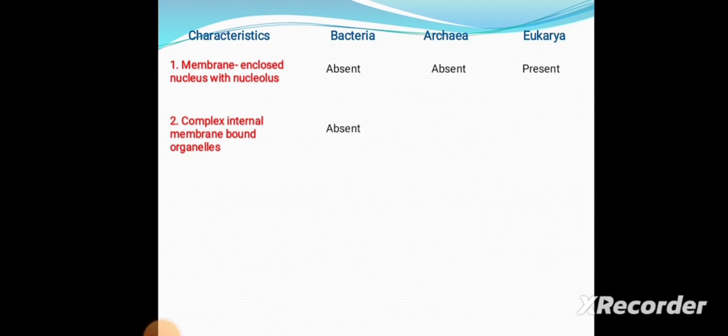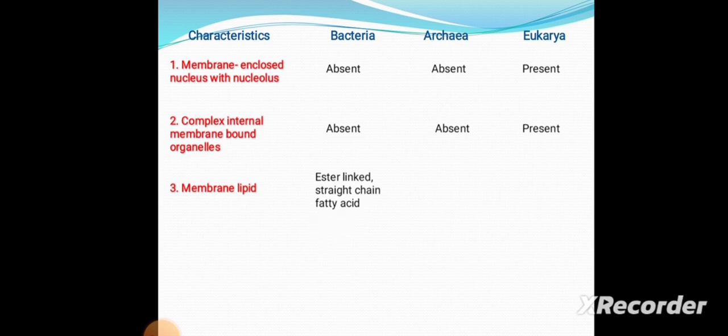Second is complex internal membrane-bound organelles. It is absent in Bacteria and also absent in Archaea, but present in Eukarya. These organelles — mitochondria, lysosome, Golgi apparatus, endoplasmic reticulum, etc. — are present in eukaryotes but absent in bacteria and archaea.